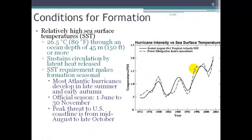The conditions for hurricane formation include high sea surface temperatures — around 80 degrees Fahrenheit through a depth of about 150 feet, a pretty deep chunk of warm ocean water. This sustains circulation because warm, moist air releases latent heat as liquid water evaporates into water vapor. Most Atlantic hurricanes develop in the late summer and early autumn when the sea has heated up. The official hurricane season is June 1st to November 30th, with the peak threat to the U.S. coastline from mid-August to late October.